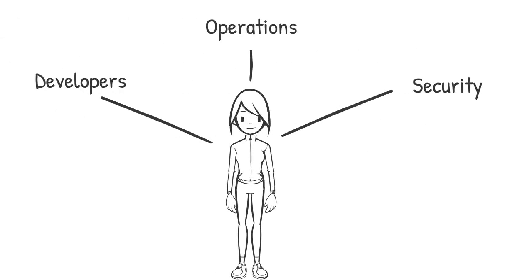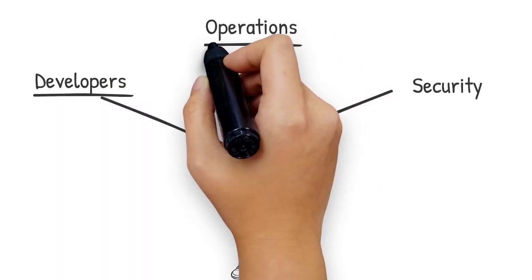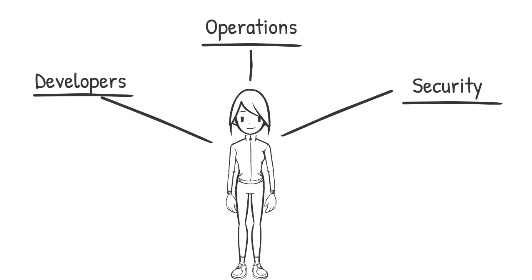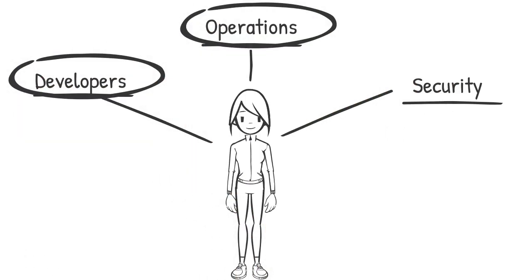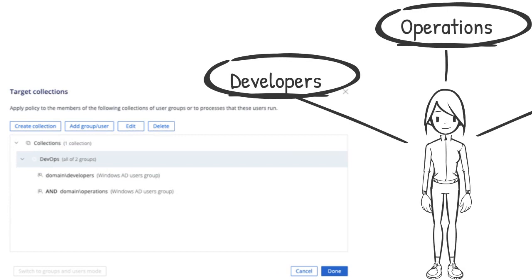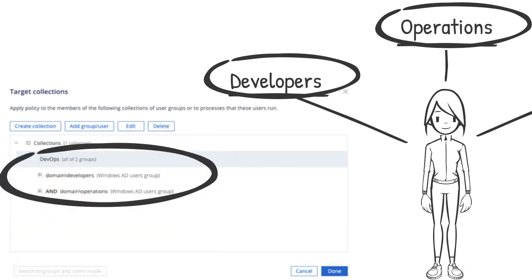Let's now look at the methods you can use to identify and target roles. The simplest method is to utilize pre-existing group membership that are assigned based on function — for example, developers, operations, security, etc. If the specific role cannot be established based on one group, then consider using a collection to combine groups. For example, dynamically create the role of dev-ops if the user is a member of both the developers and operations groups.